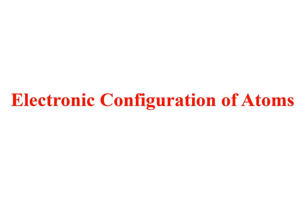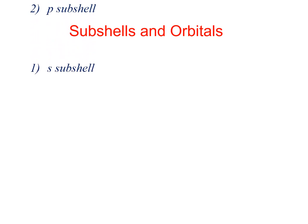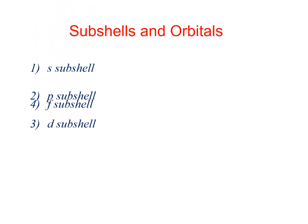We are going to discuss the electronic composition of atoms. Before going to electronic distribution in different shells, you should know there are four sub-shells: s, p, d, and f. In the s sub-shell, a maximum of two electrons can be accommodated; in the p sub-shell, six electrons; in the d sub-shell, ten electrons; and in the f sub-shell, a maximum of fourteen electrons.